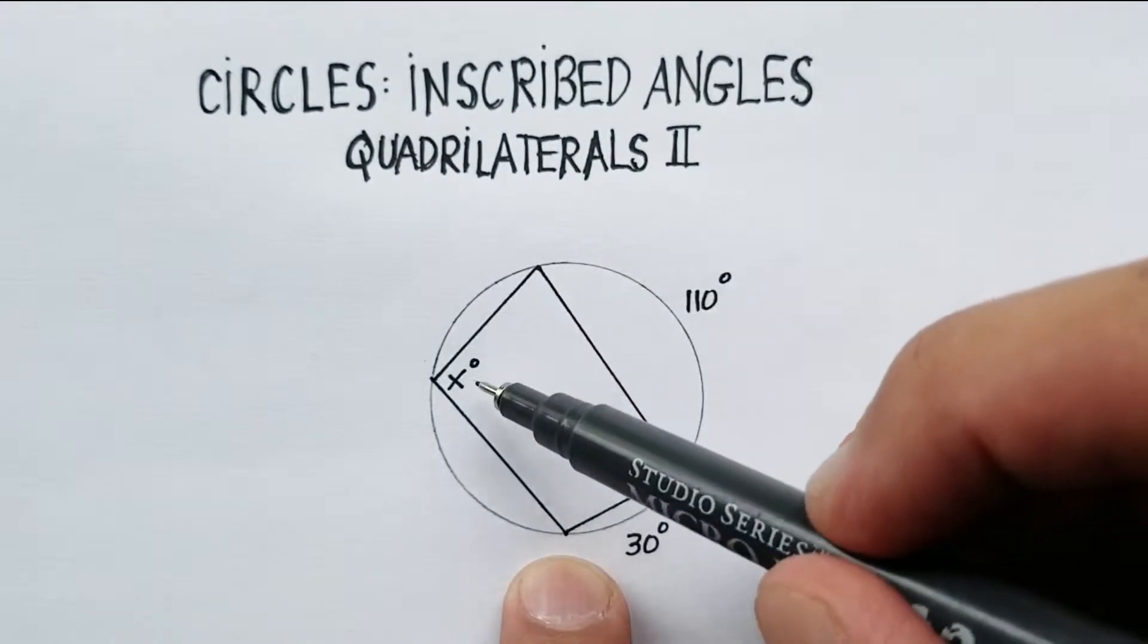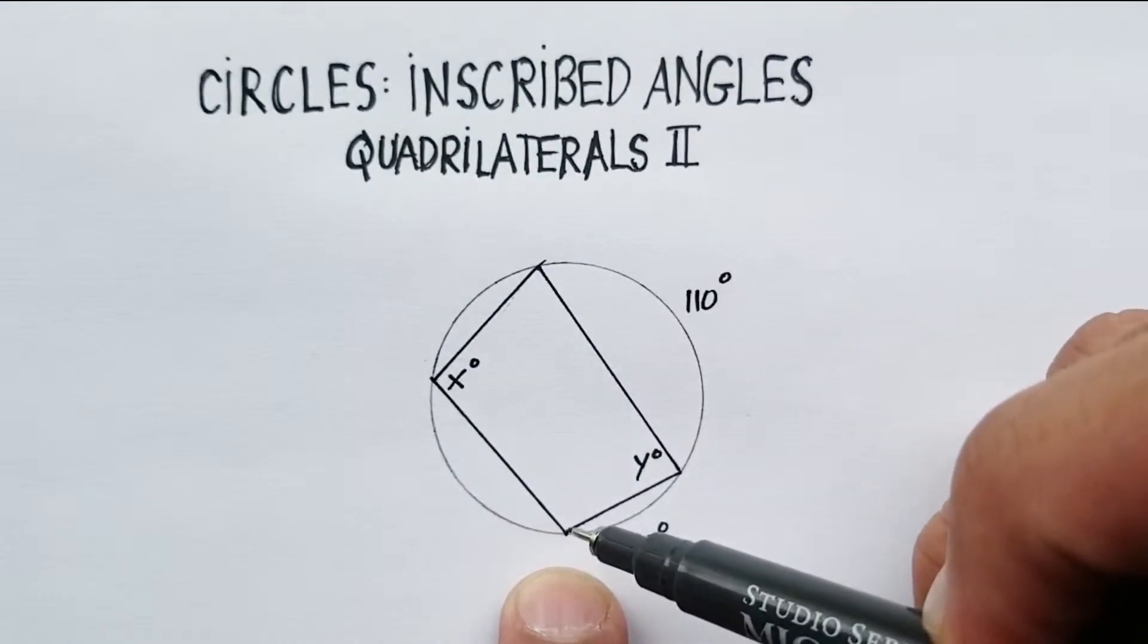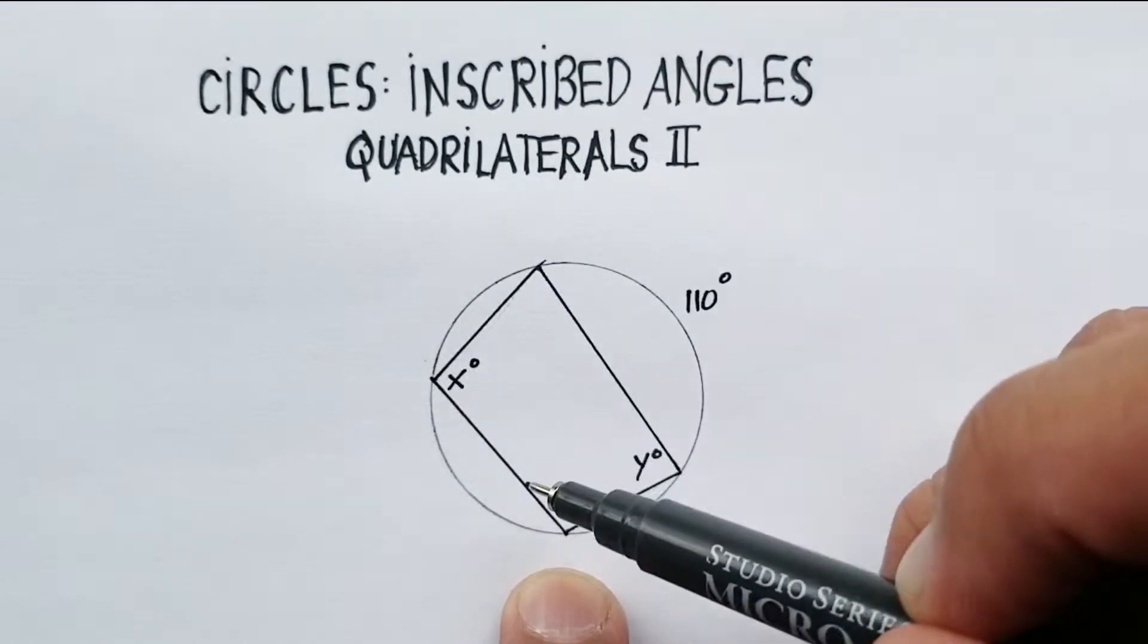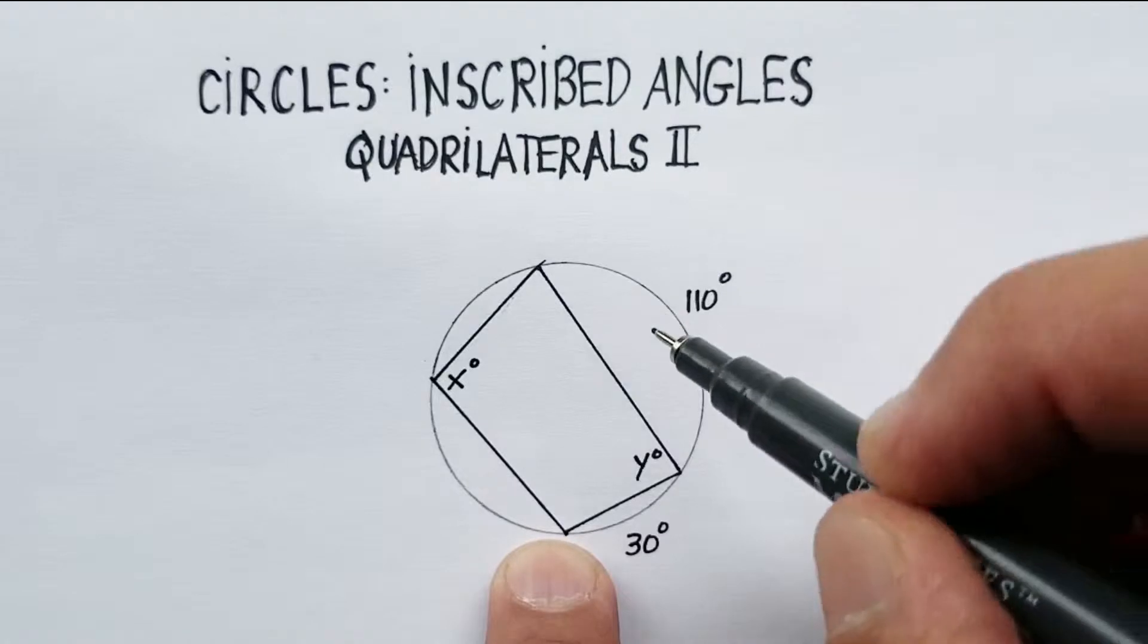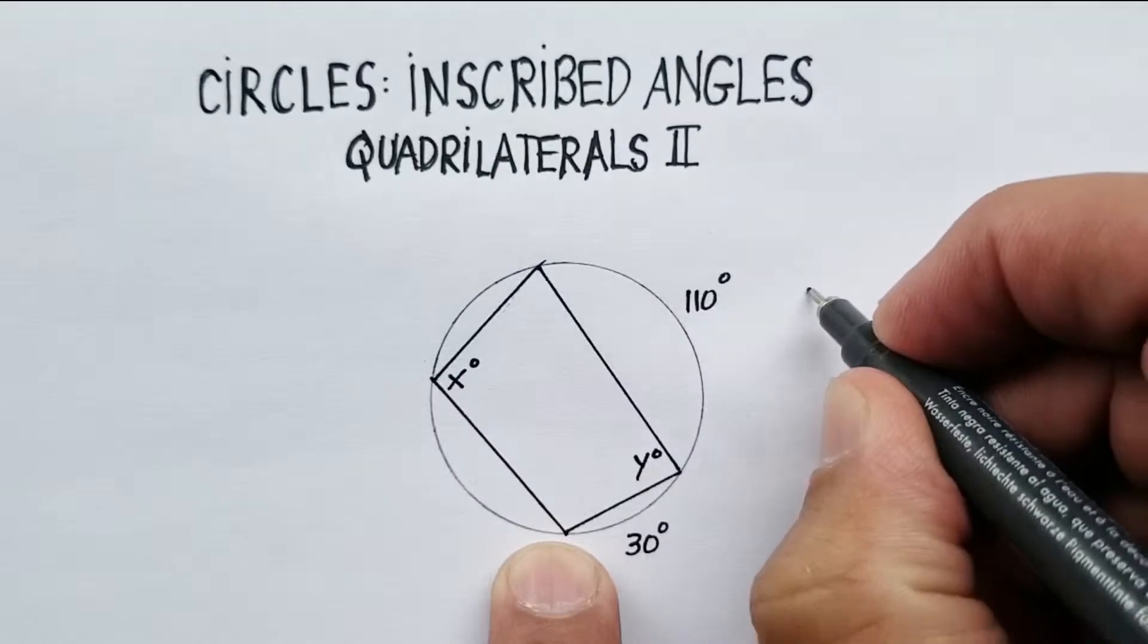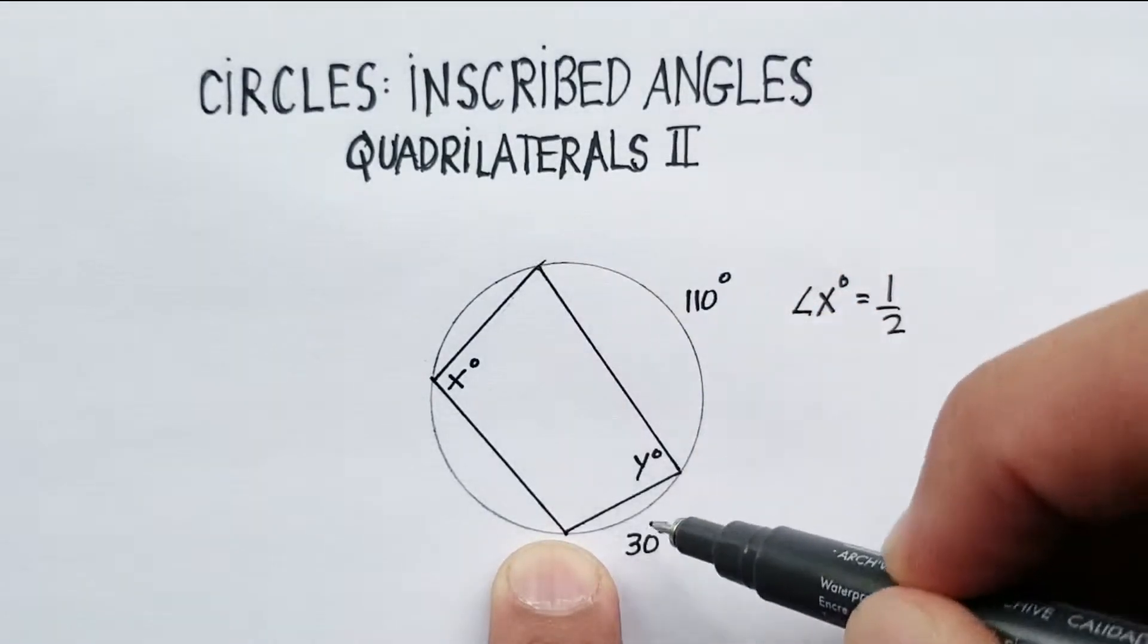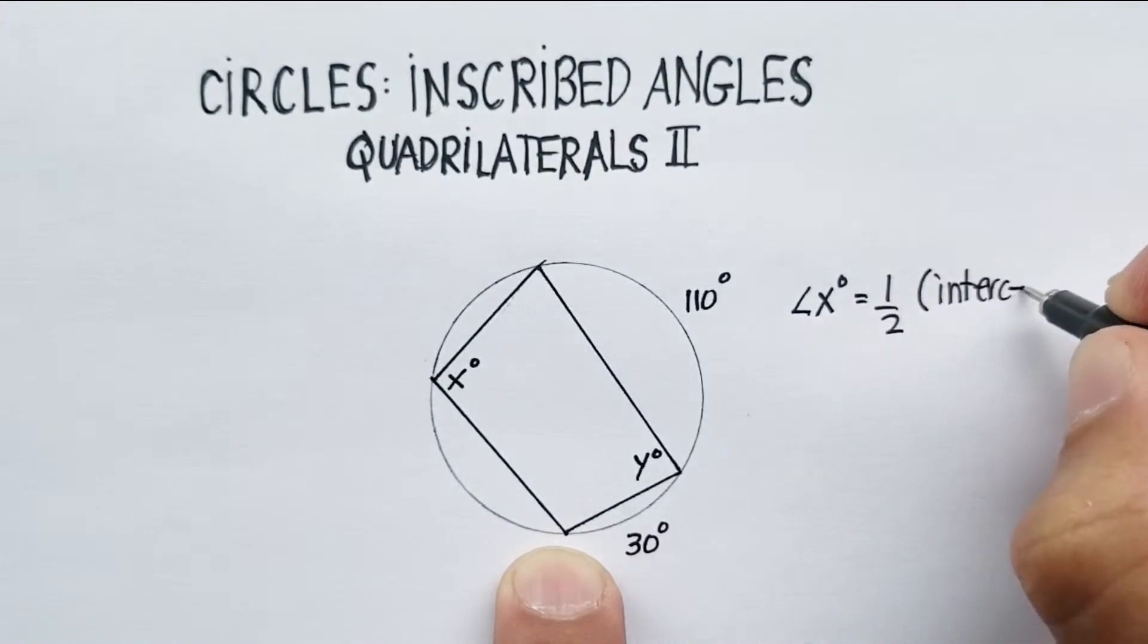So we know that when you have an angle, for example, let's just take angle X. The vertex is on the circumference, and then two cords go out to the circle and the arc of the circle. The rule says that the angle is equal to one-half, so here I'm going to put over here, angle X is equal to one-half the intercepted arc.